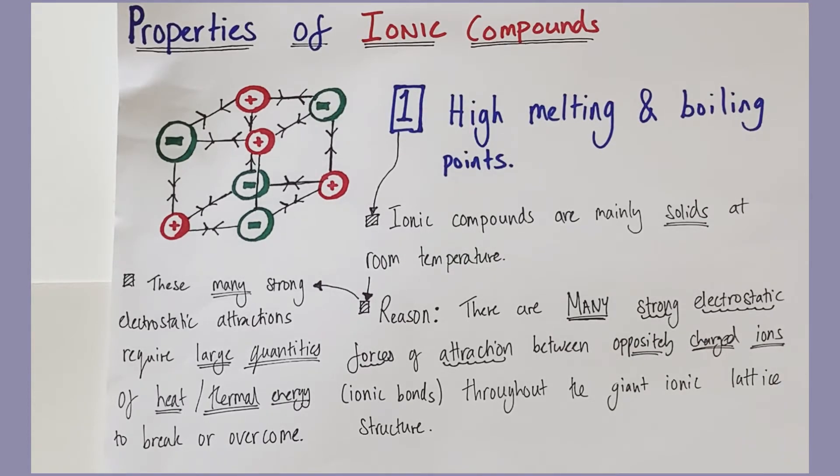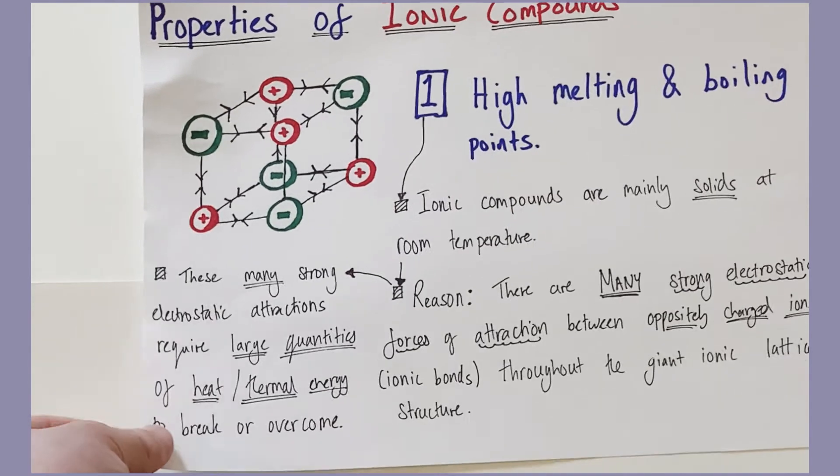A lot of heat energy to overcome and break those many strong electrostatic forces of attraction between the oppositely charged ions throughout the lattice. And that's why they have high melting points. For example, sodium chloride has a melting point of 801 degrees centigrade, way beyond anything your Bunsen burners can do.